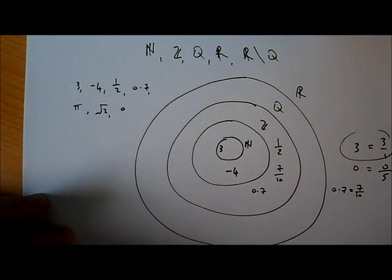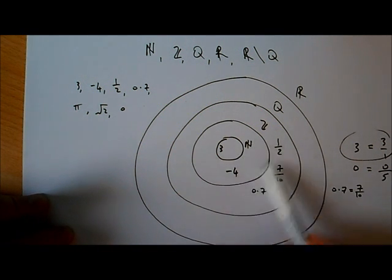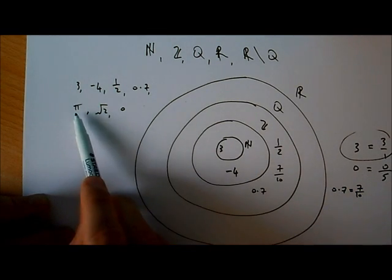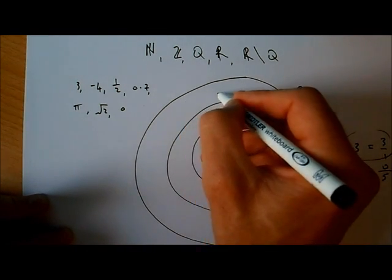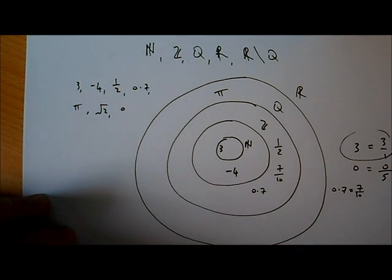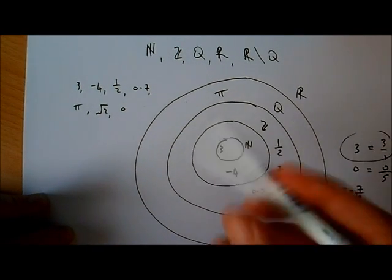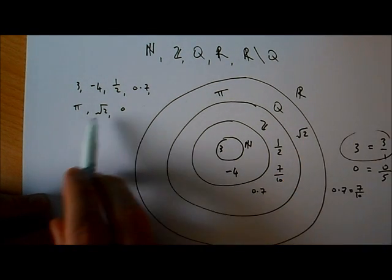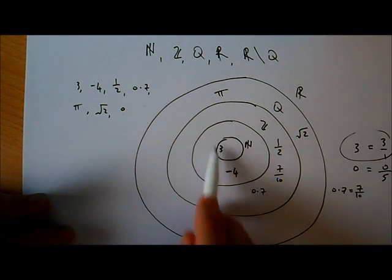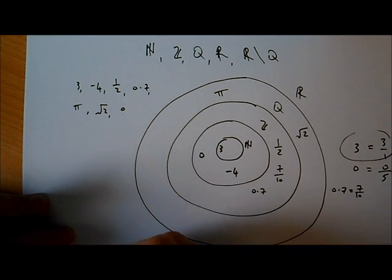What about pi? Well, we know pi is an irrational number, so it's not a natural number, it's not an integer, it's not a fraction, because any irrational number can't be written as a fraction. So pi is going to go in the real number section — it is a real number, so it goes out there. The square root of 2 is the same: it's not a natural number, not an integer, not a rational number or a fraction. Square root of 2 is a real number so it goes in the real number section. And 0 — well, 0 is not a natural number, but is it an integer? Yes, it is. So 0 goes in the integer section.